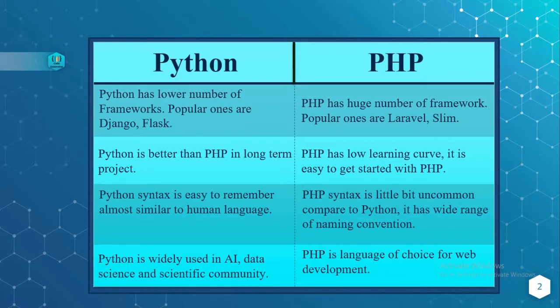Python syntax is easy to remember because it is similar to human language, whereas PHP syntax is a little uncommon compared to Python and has a wide range of naming conventions.